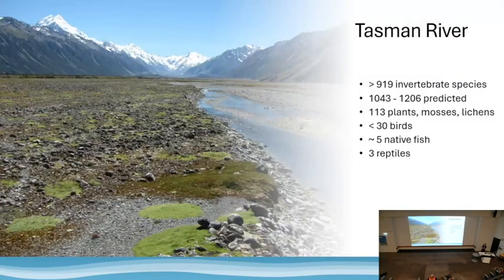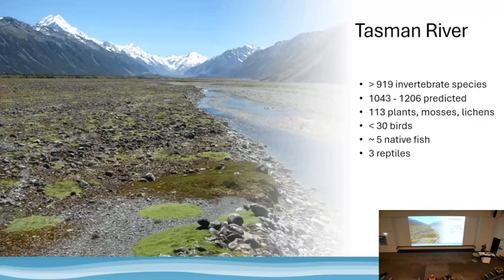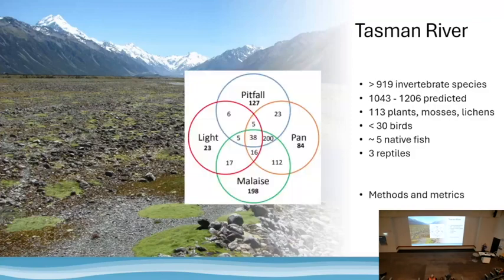Here's a real-world example. This is the Tasman River. Back around 2005, Project River Recovery up in Twizel did some really cool work where they monitored invertebrates in just one of the vegetation communities. Chris Wilmore's work had split it up into 11 vegetation communities; they looked at just one, the Raoulia community. Through the sampling of invertebrates, we found over 919 different species, and models suggested that's probably about 1,200 species based on that sampling. Compare that to the other taxon groups in that system: about 113 plants, mosses and lichens, probably less than 30 native birds, around 5 native fish, and 3 reptiles. None of those other things are necessarily going to predict what's happening with invertebrate biodiversity.